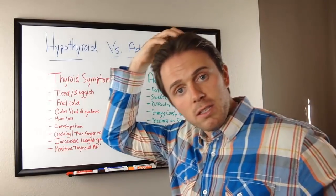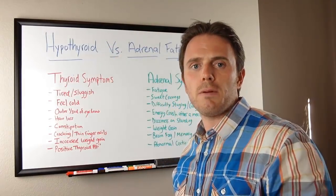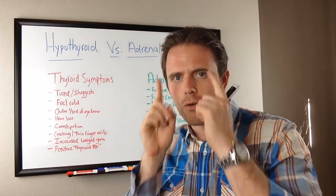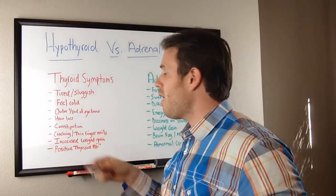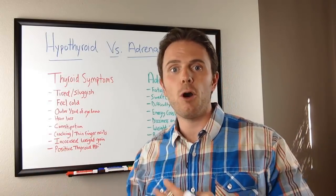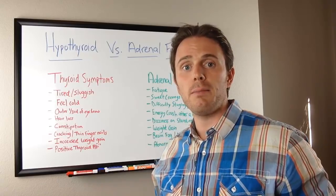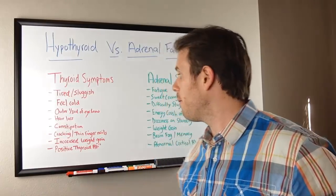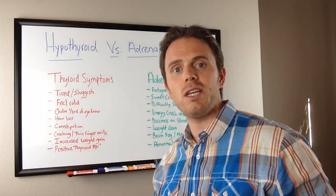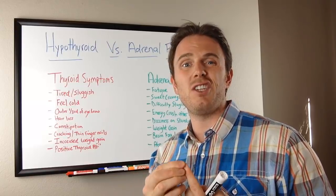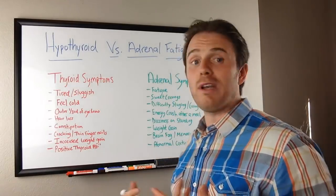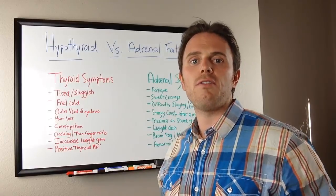Hair loss is another thyroid symptom. For women, we primarily see thinning on top of the crown area — typically it's your hairdresser who first notices your hair isn't as thick as it used to be. We'll also see the outer third of the eyebrow thinning. Constipation is another sign; we need thyroid hormone for gut motility. Constipation could mean a gut infection, SIBO, parasite, fungus, or bacteria, but sometimes it's simply lack of thyroid hormone. Cracking of the fingernails is also linked, because we need thyroid hormone for healthy digestion and essential fatty acid absorption. Finally, increased weight gain and positive thyroid antibodies are also thyroid symptoms.